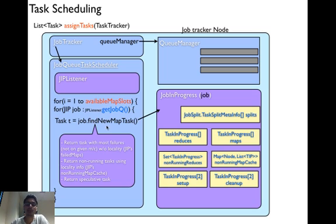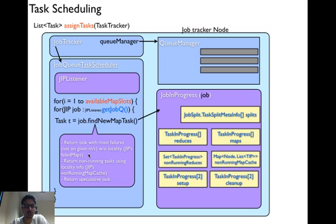The FindNewMapTask method uses these data structures to determine which task to schedule. First, it looks at whether there is a task with the most failures, without taking into account locality information, but making sure that task had not already failed on that particular machine — referring to JobInProgress's maps field. If there is no such task, it looks at JobInProgress's nonRunningMapCache and returns the non-running task using locality info, that is the node. If there are no failed maps or non-running tasks, it returns a speculative task.